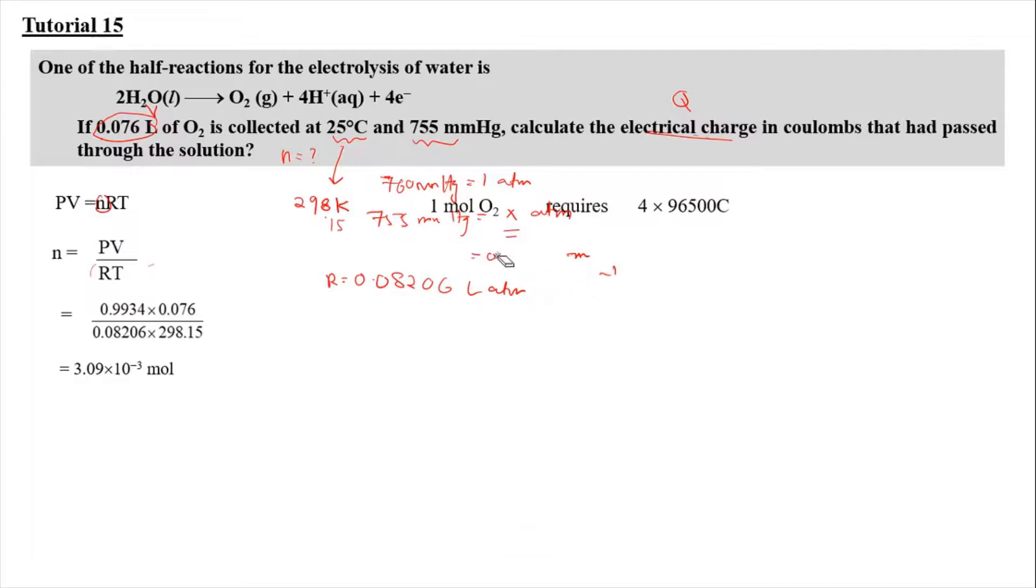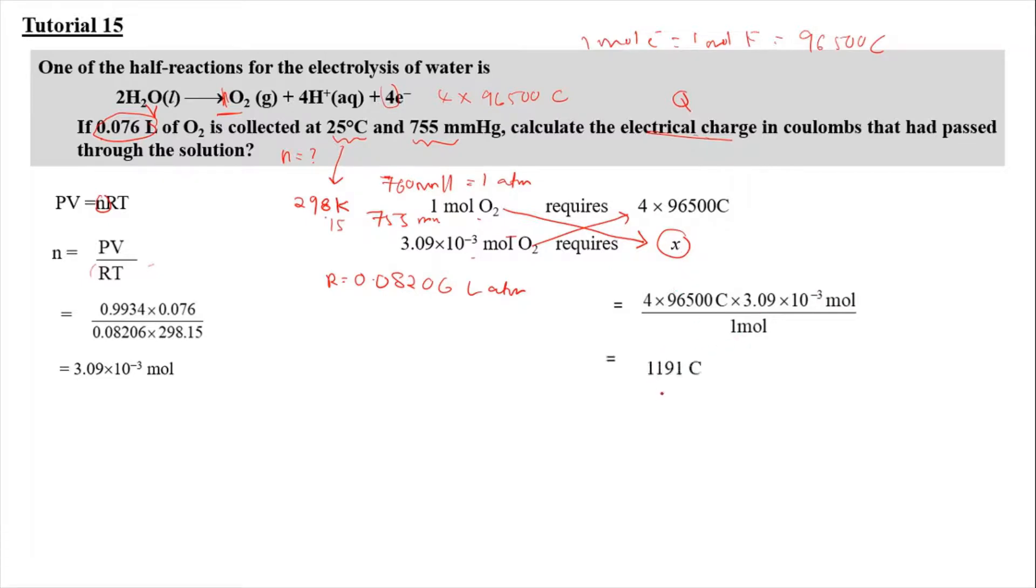From the equation, 1 mol of oxygen requires 4 mol of electrons, which is 1 mol of electron equal to 1 mol of Faraday equal to 96500 coulomb. So when you have 4 electrons, it means that 4 multiply by 96500 coulomb. But the one that we calculated only contains 3.09 times 10 to the power of negative 3 mol of oxygen. So we need to find X here. We can cross multiply. So we will get 4 times 96500 coulomb times 3.09 times 10 to the power of negative 3 divided by 1 mol. So our X here, we will get 1191 coulomb. The electrical charge in coulomb that has passed through the solution is 1.191 coulomb.